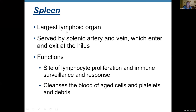The next organ is the spleen — the largest lymphoid organ. It is served by the splenic artery and vein, which enter and exit at the hilum, same as in lymph nodes. Unlike lymph nodes which filter lymph, the spleen cleans your blood — it cleanses the blood of aged cells, platelets, and debris. It is also a site of lymphocyte proliferation and immune surveillance and response, so it has both immune function and a cleaning function.